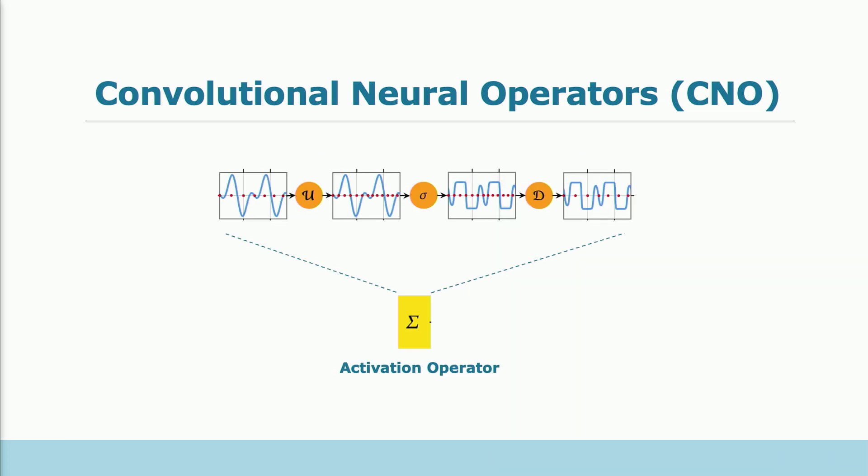And for example, how we adapted the activation operator is we don't apply it locally or pointwise anymore, but we apply it in three stages. So the first stage, we upsample our signal, then we applied the activation pointwise in the usual way, and then we downsampled the function back to the physical space.